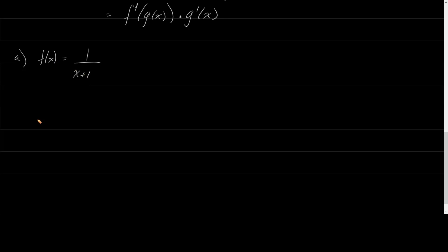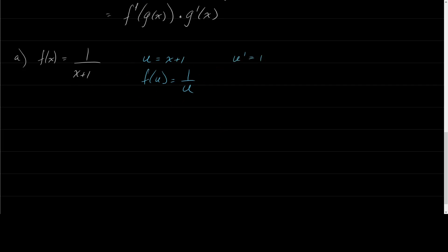Let's think about what this is really saying. If I let u equal x plus 1, then this function can be rewritten as f of u equals 1 over u. Also, if u equals x plus 1, then u prime equals just 1.